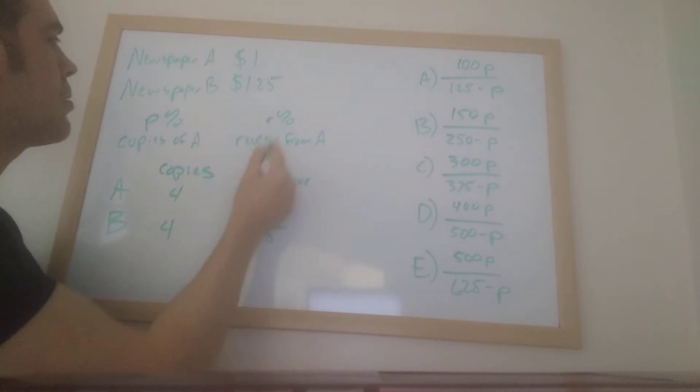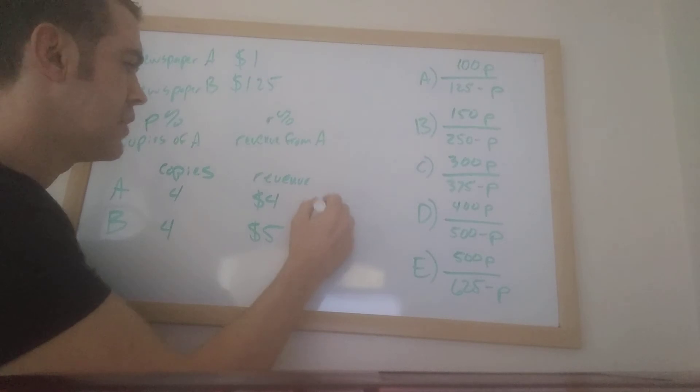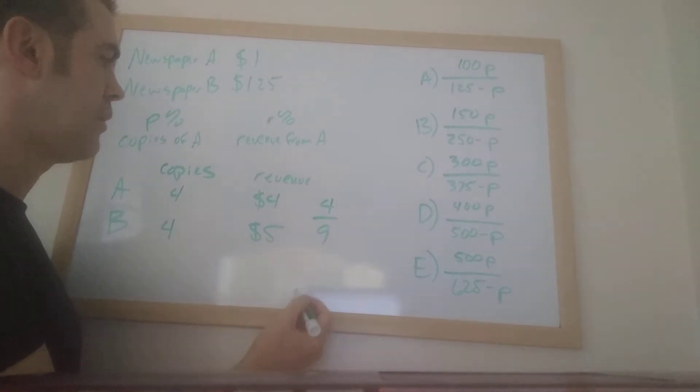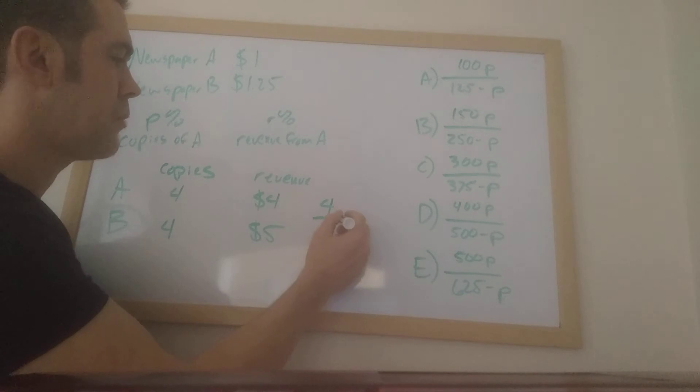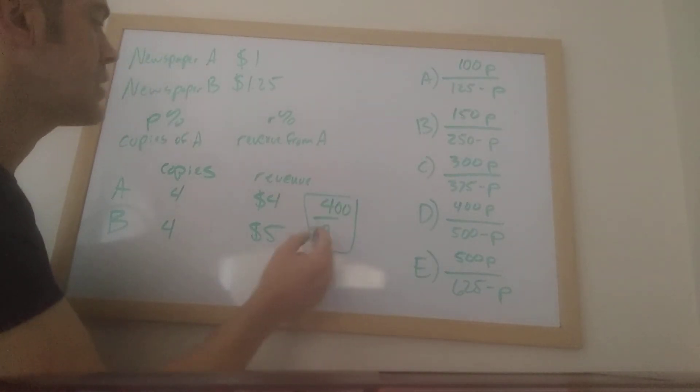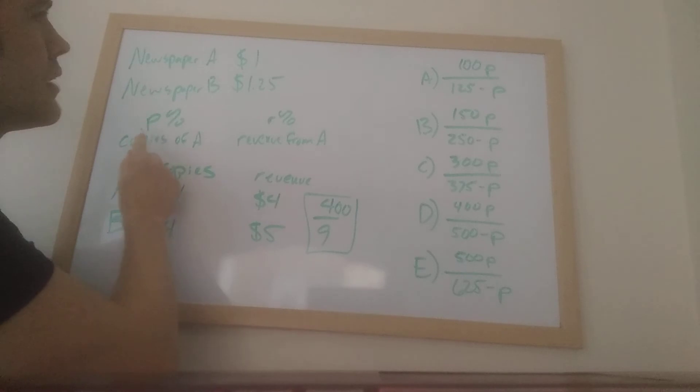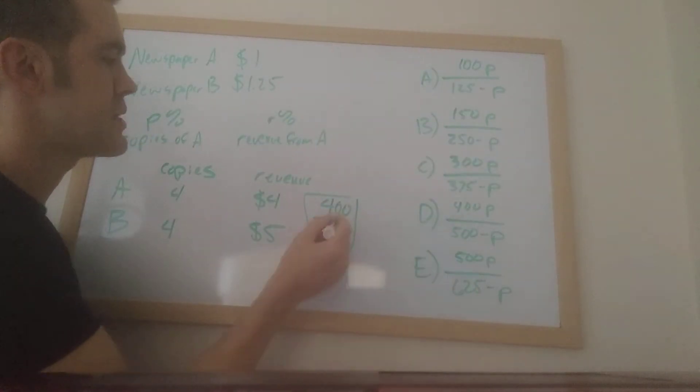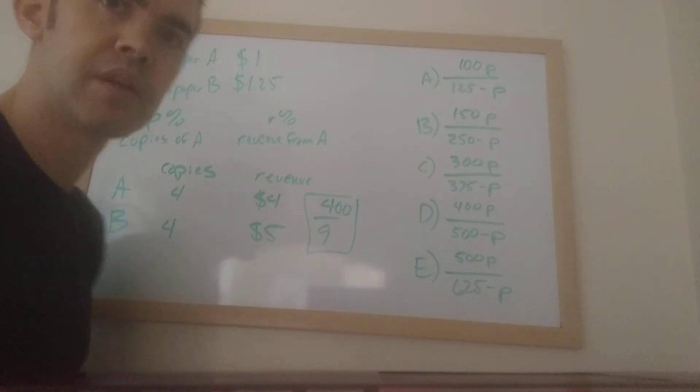So they ask what percent of the revenue comes from A. Well, now we've got some numbers that we can deal with. So what percent comes from A? Well, I've got $4 from A, five from B. So I'm going to say 4 ninths of the revenue comes from A. However, this needs to be a percent, so I'm going to multiply this by 100. So in other words, it's going to be 400 over 9. That gives us a percent. So this here is what's called a target. Essentially, if I plug in whatever P is into these, whichever one spits out 400 over 9 should be the correct answer.